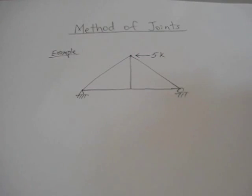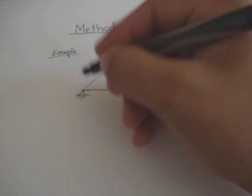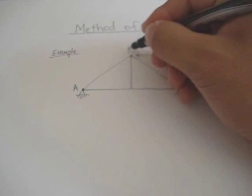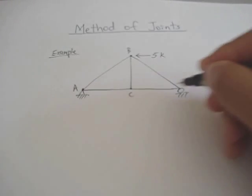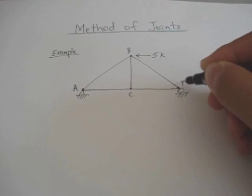Now first thing first you want to label all of your joints. Let's call this joint A, joint B, joint C and joint D.